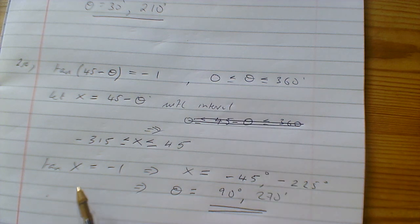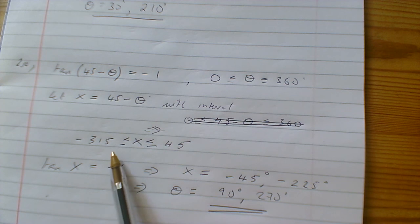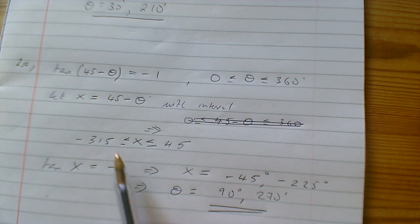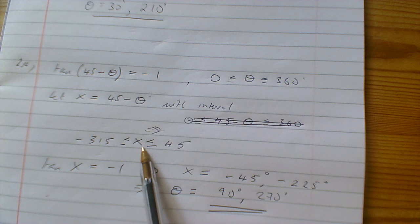Now we solve the simple equation tan X = -1. The solutions within that range are -45 degrees and -225 degrees, which will translate to solutions of θ within the required range.